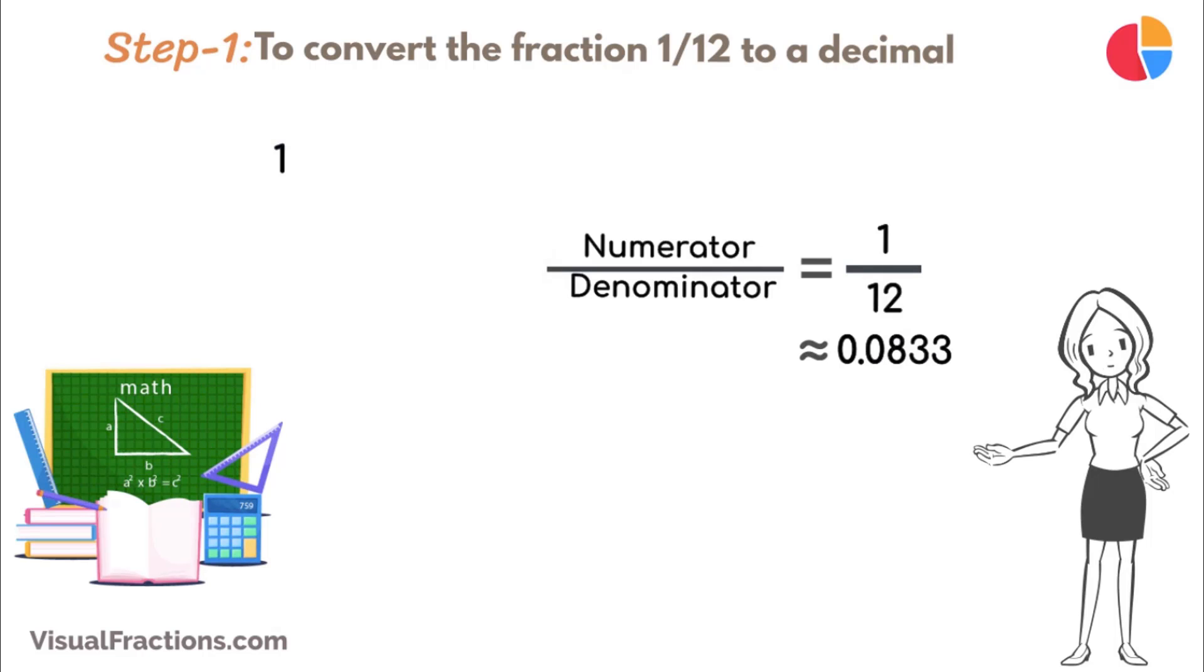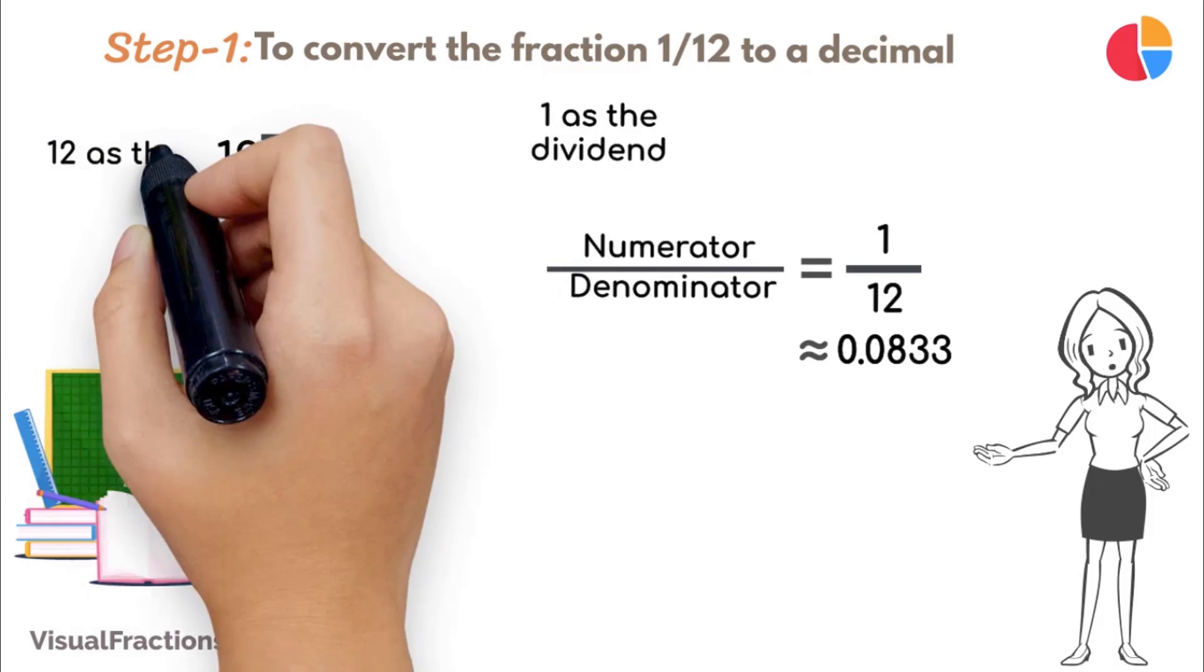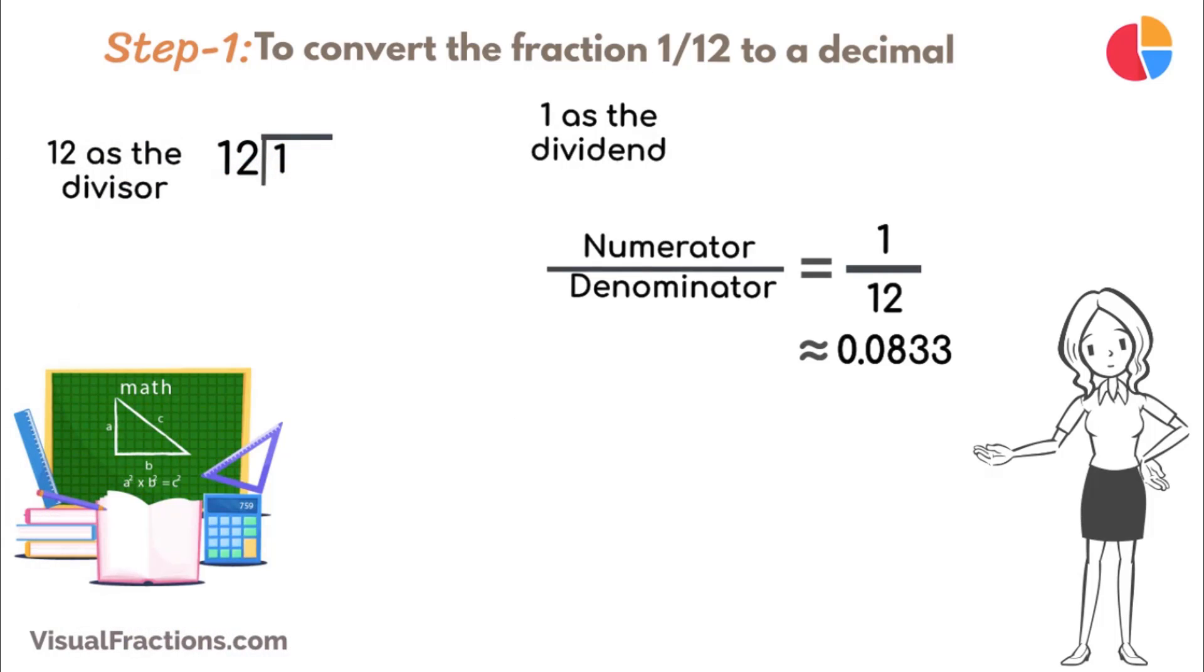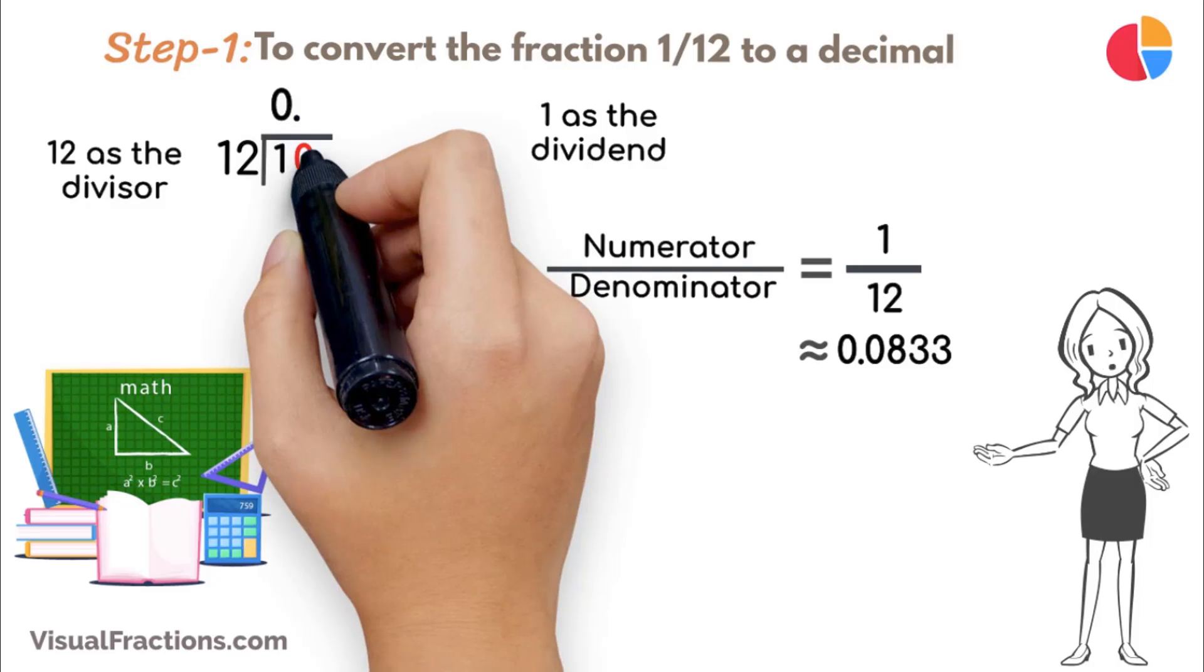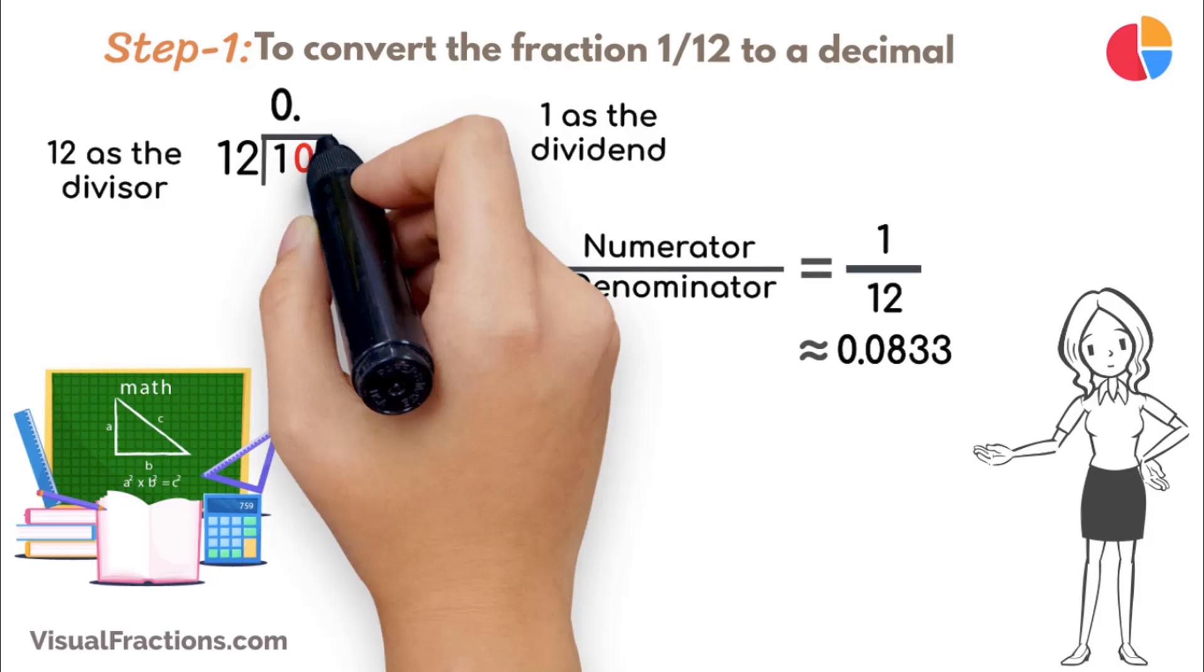Place 1 as the dividend and 12 as the divisor. Since 12 doesn't fit into 1, place a decimal point in our quotient and bring down a 0, making it 10. 12 goes into 10 zero times, so we initially put 0 in our quotient.